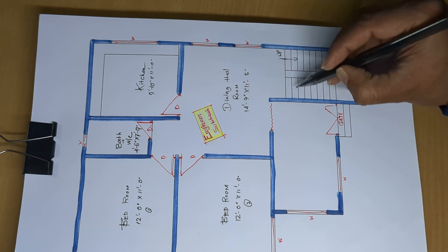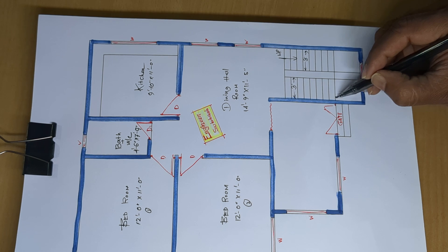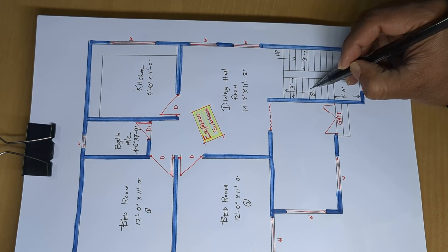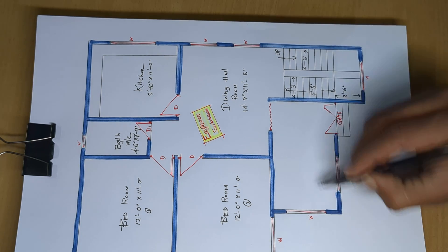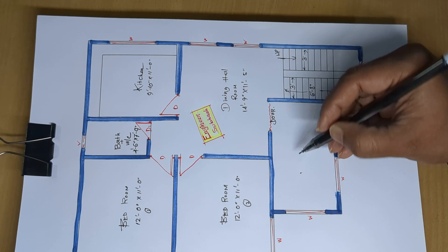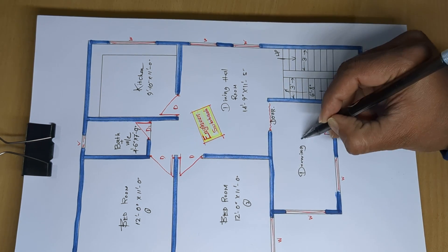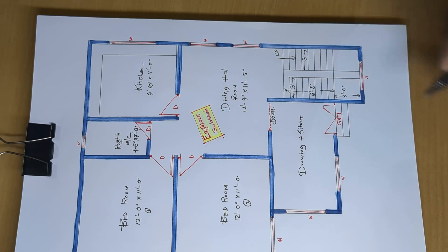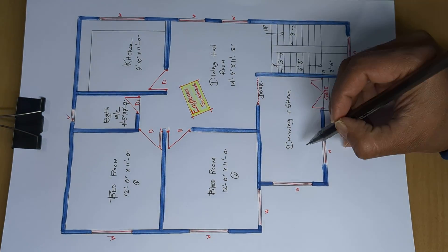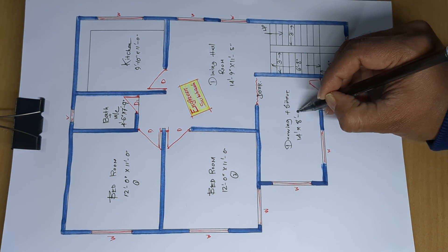Stair up. 3 feet wide, 3 feet wide, and 3 feet 6 inch wide. 6 feet 8 inch. Here the drawing plus sit-out area — you can see the design: 14 feet by 8 feet 0 inch.